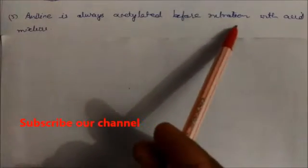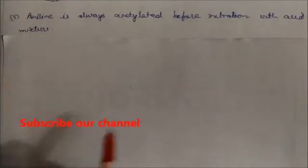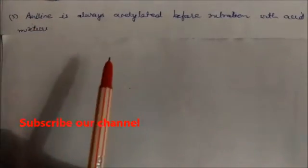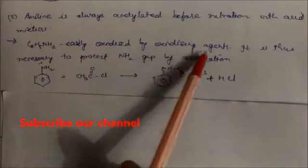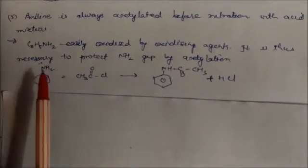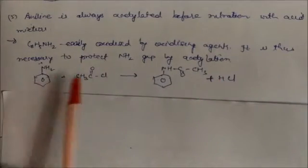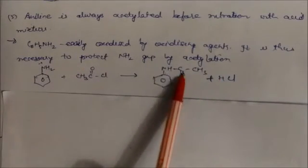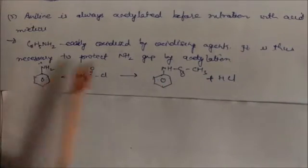Aniline is always acylated before nitration with an acid mixture. This is because aniline is easily oxidized by the oxidizing agent HNO3. So it is necessary to protect the NH2 group by acetylation, converting it to NHCOCH3. Otherwise, over-nitration will occur and the product will be directed to ortho and para positions.